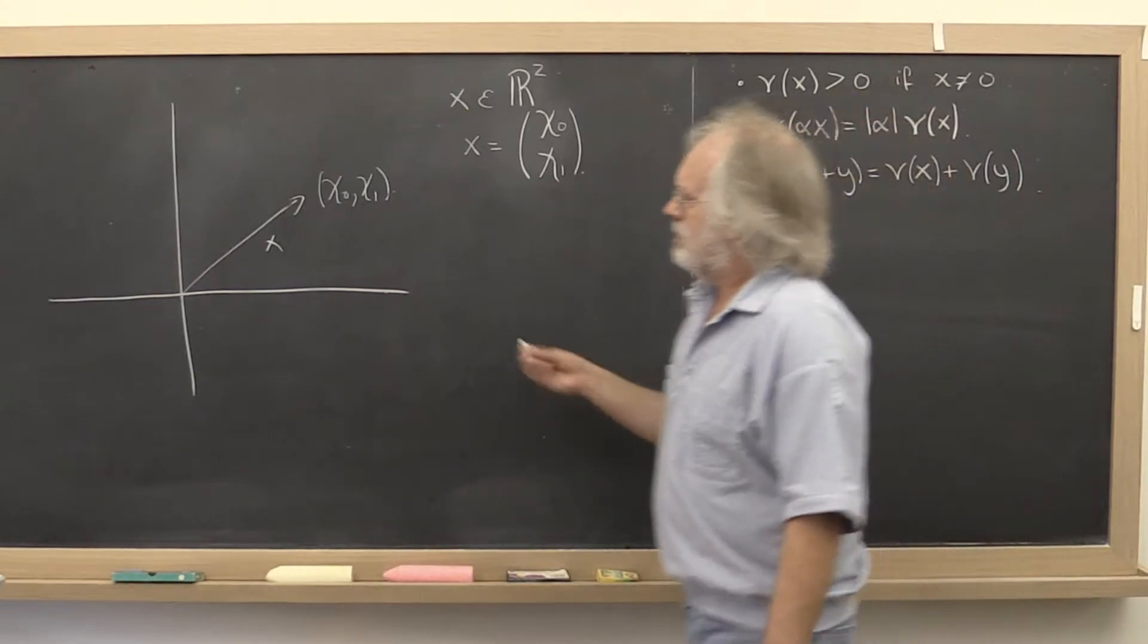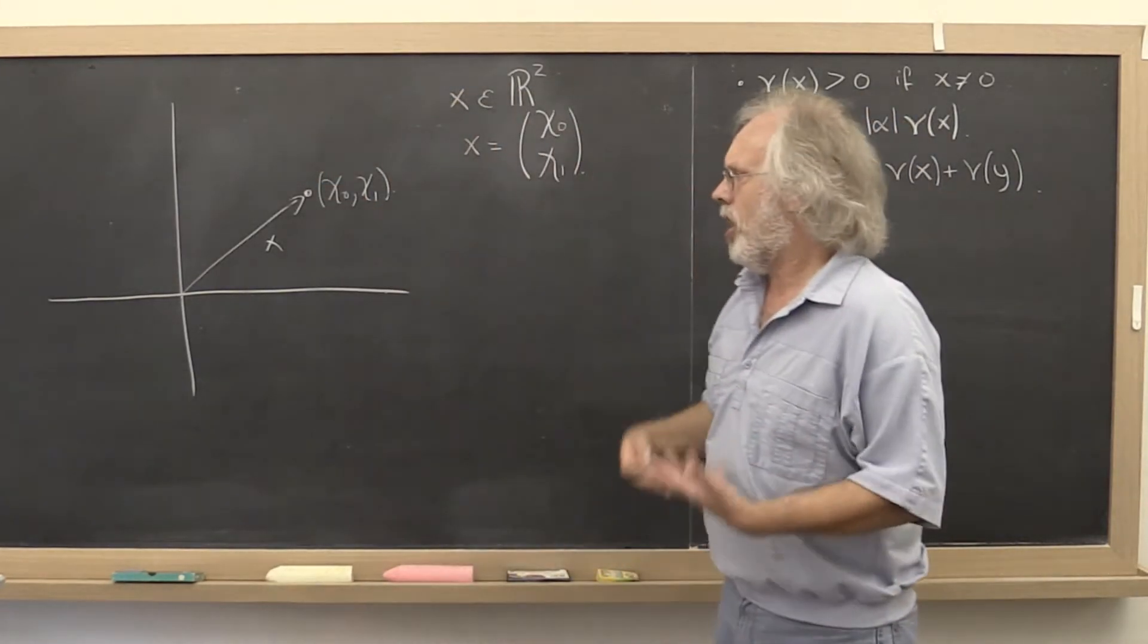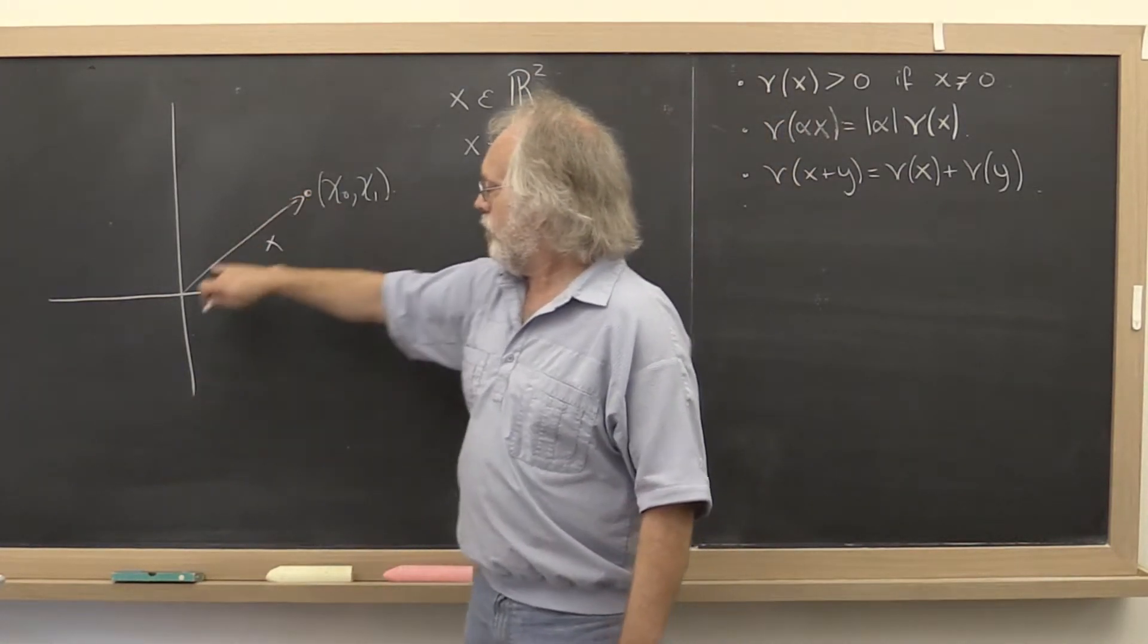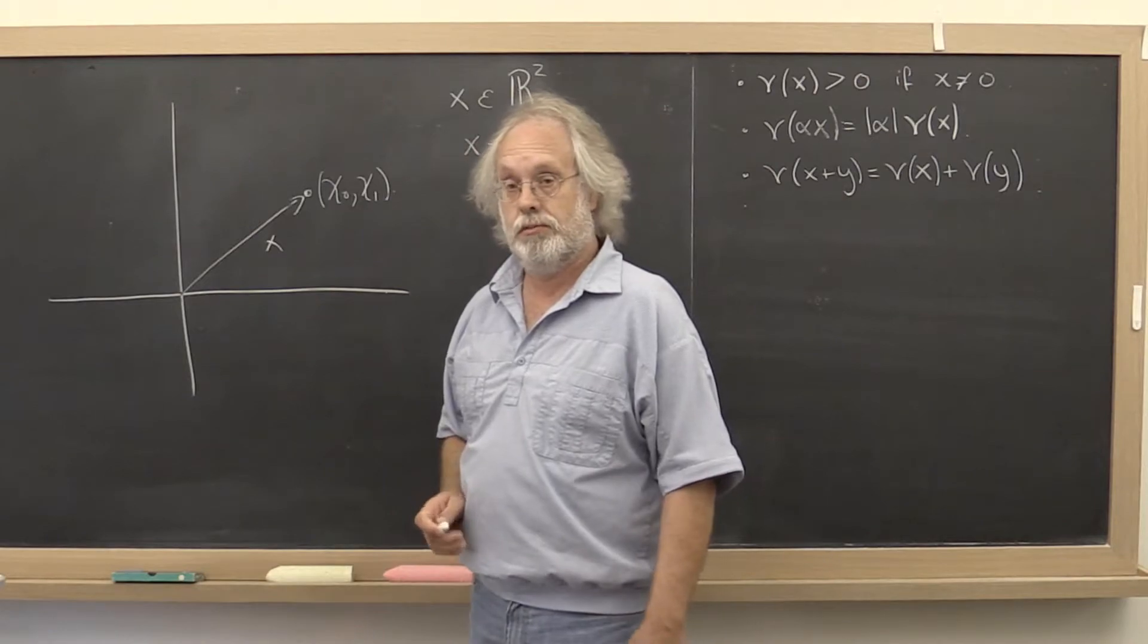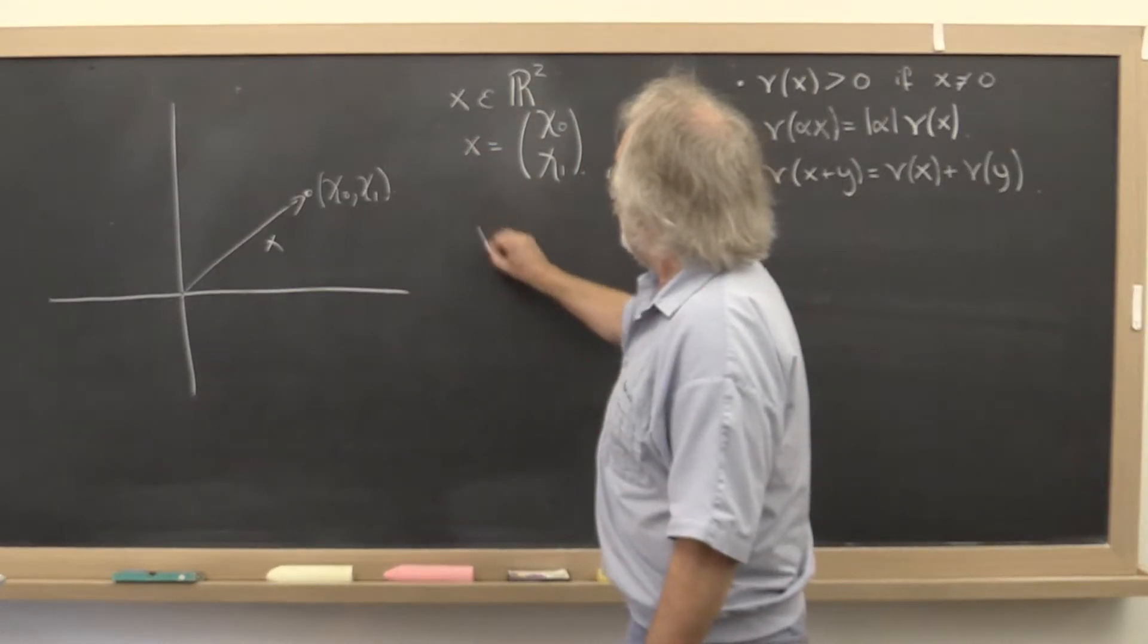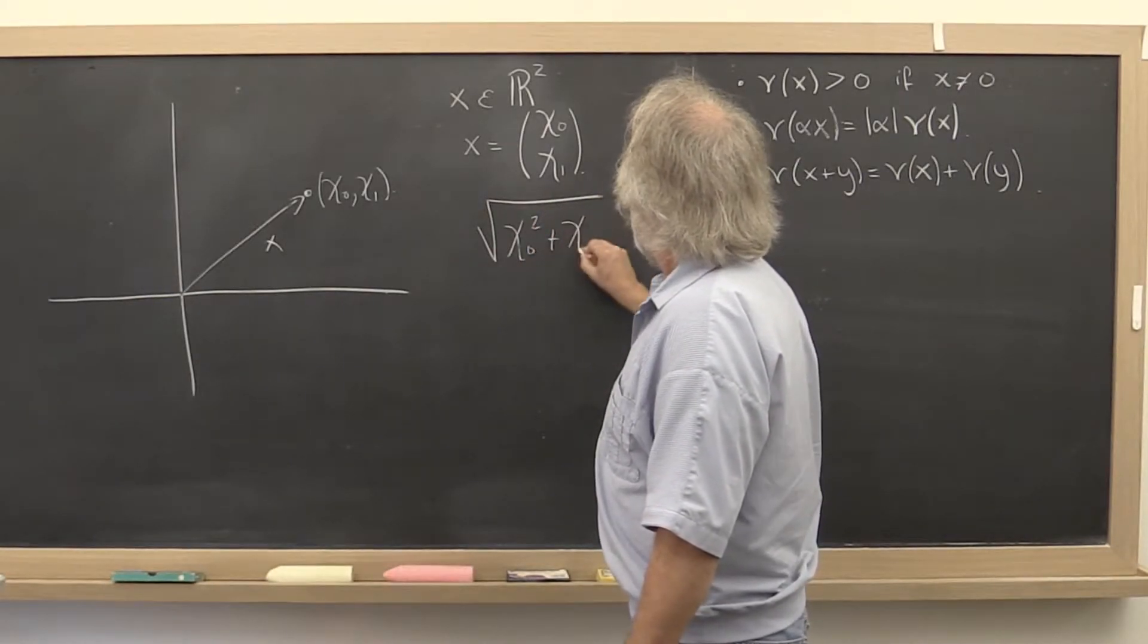And what does that mean? Well, we have a pretty strong notion of the distance from that point to the origin. And you learned about Euclidean distance. That is defined by the square root of χ₀ squared plus χ₁ squared.